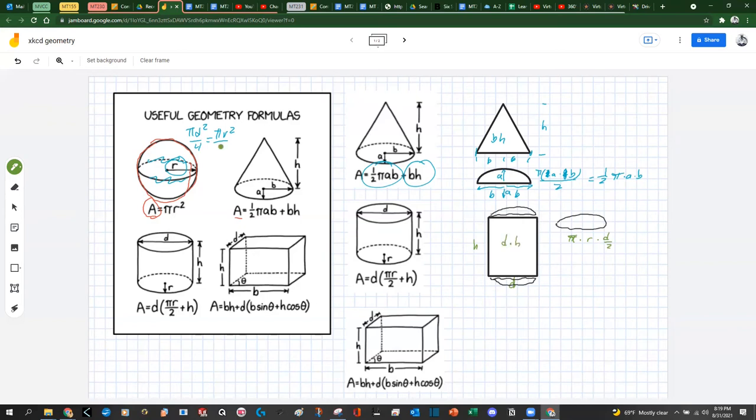And the area here is d times h. So if we combine these things and we take d out of, you know, factor it out, we've got d times pi times r over 2 from this. And then we have just h here. So there's that. Now, I don't know how useful this is, but I guess that's the funny part there.